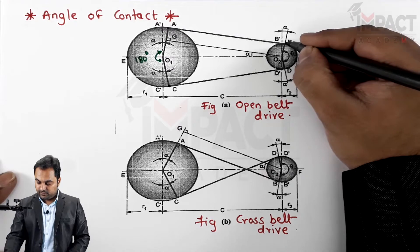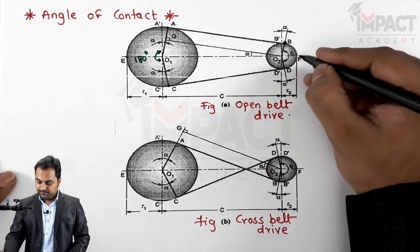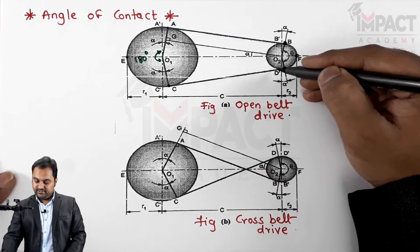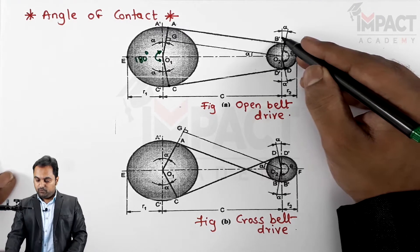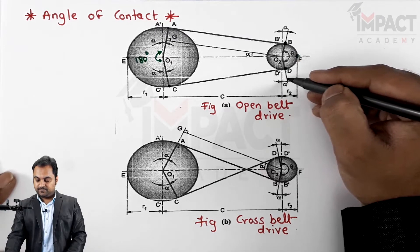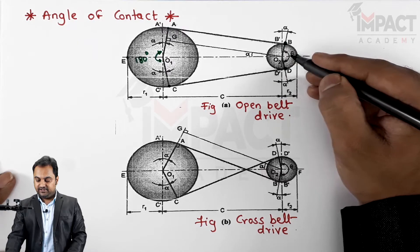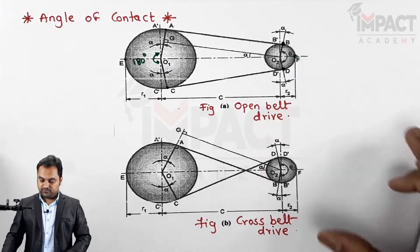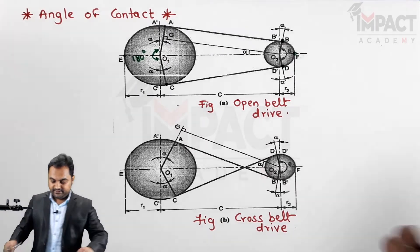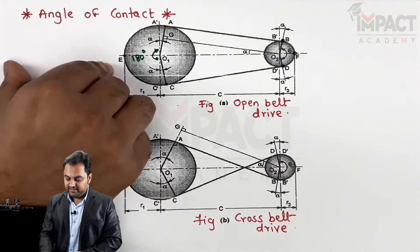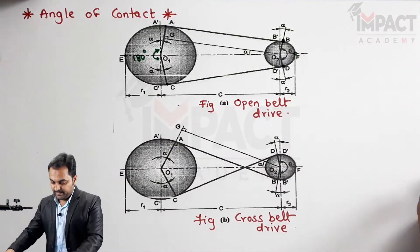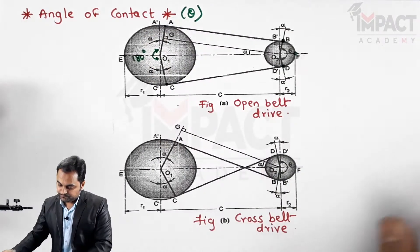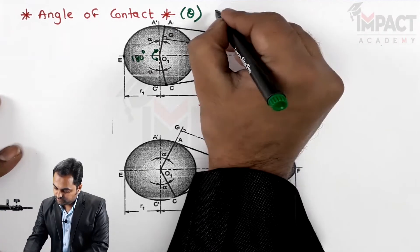For the cross belt drive, the angle of contact goes from point B-F up to D. The vertical line indicates 180 degrees, and alpha has been subtracted from both sides. So for the smaller pulley, theta equals 180 degrees minus 2 alpha. I'll write the bigger pulley formula on the left and the smaller pulley formula on the right. The angle of contact is also called the angle of embrace.